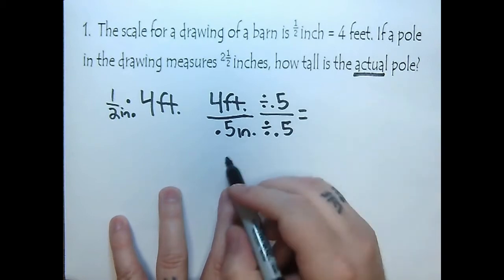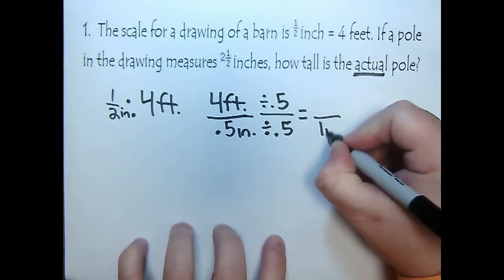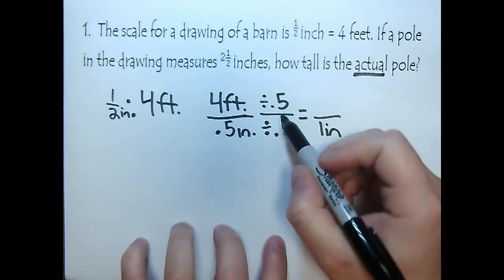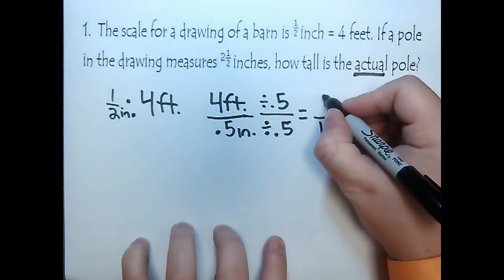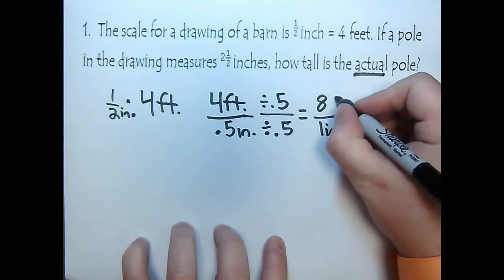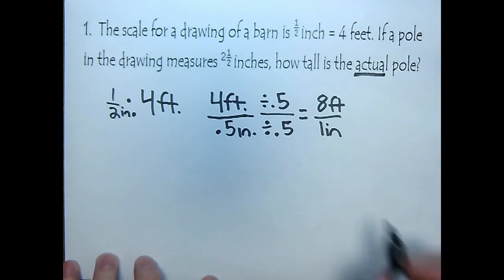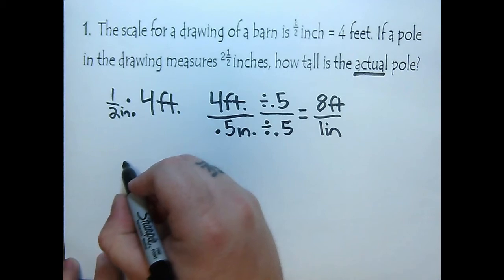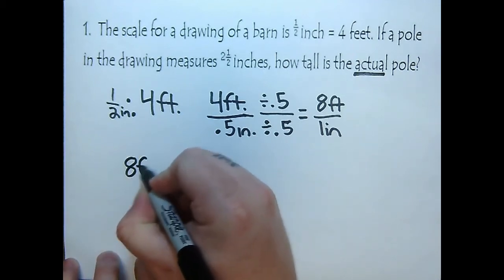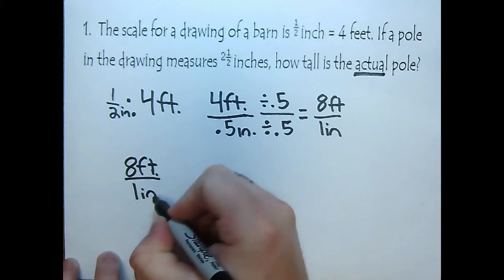This is going to turn this into a unit rate. So I'm going to get one on the bottom, so one inch, and then 0.5 will go into four eight times. So eight feet on top. So now we've created a unit rate of eight feet to one inch.